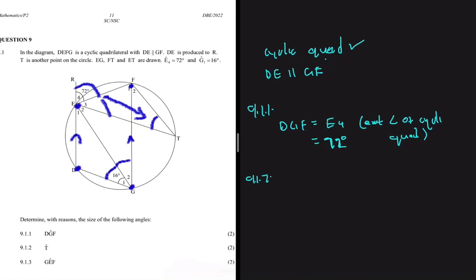And then the chord EF also subtends G2. So angle T should be equal to angle G2 because they're being subtended by the same chord - they're in the same segment. Angles in the same segment.